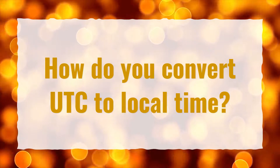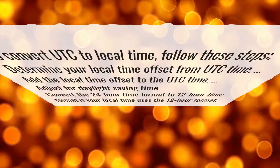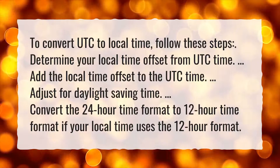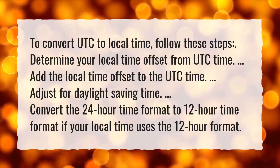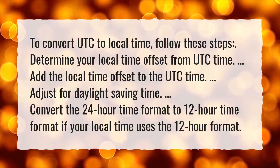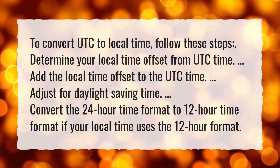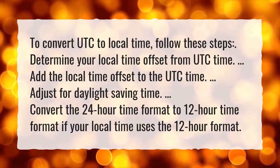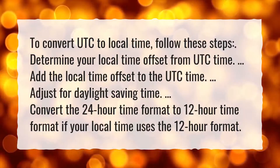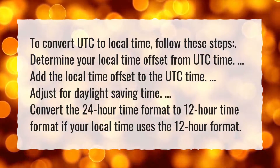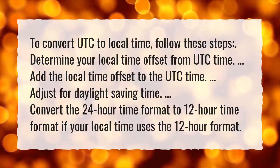How do you convert UTC to local time? To convert UTC to local time, follow these steps. Determine your local time offset from UTC time. Add the local time offset to the UTC time. Adjust for daylight saving time. Convert the 24-hour time format to 12-hour time format if your local time uses the 12-hour format.